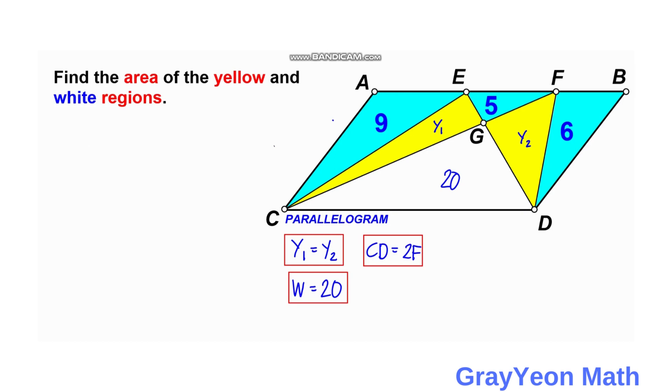If CD is equal to 2EF, then we can label this length as 2EF and this is EF. And we can actually say that if this is 2 times EF, this CD, then AB is also 2EF. So if you subtract EF from 2EF, you will have EF. We can say that the sum of these two segments is actually equal to EF.